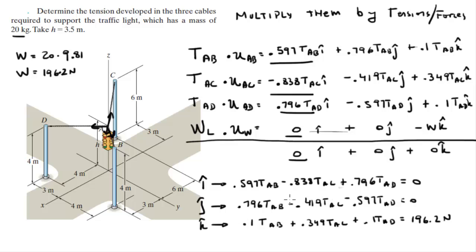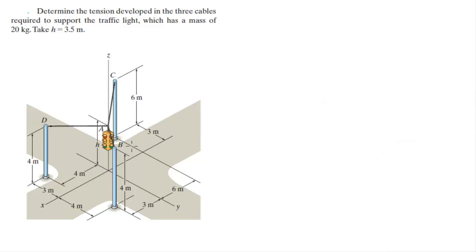Now we have our system of three equations. If you can solve it yourself, pause the video now. I'm going to replace tension AB with x, tension AC with y, and tension AD with z, just to make it more visually appealing. I'll use the method of matrices — it's very systematic and I like it.